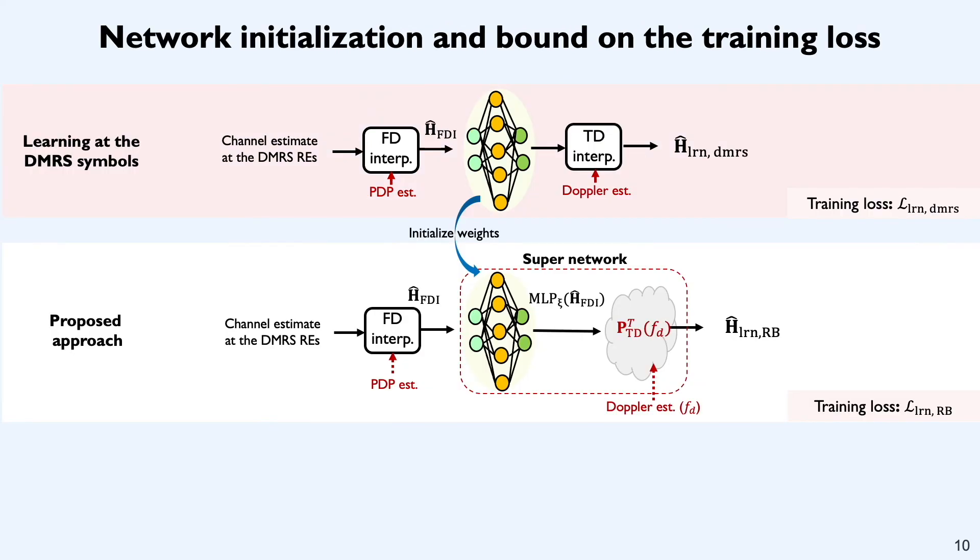Now let me explain how we initialize the MLP network within the super network and also discuss the bound on the training loss. In our procedure, we simply load the weights from the previous training procedure into the super network and we also showed in our paper that the training loss with the proposed method is upper bounded by the quantity shown over here. This quantity depends on the training loss when learning exactly at the DMRS locations which is L Learn DMRS and also the error due to the time domain LMMSE interpolation block.